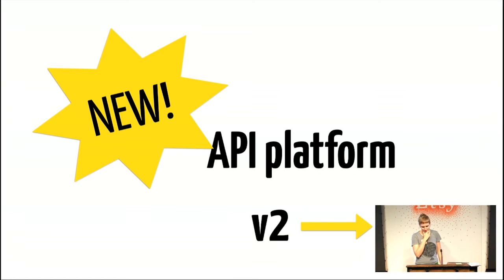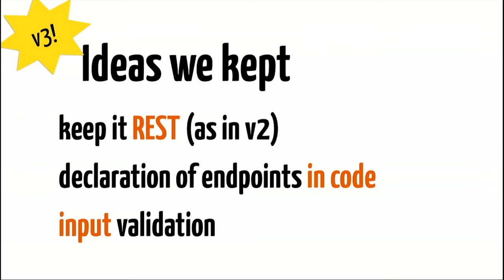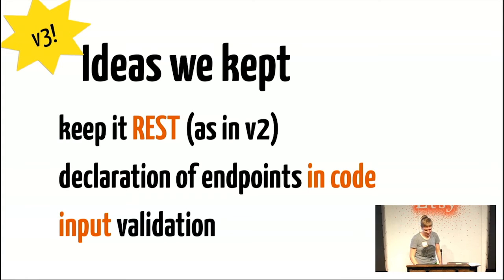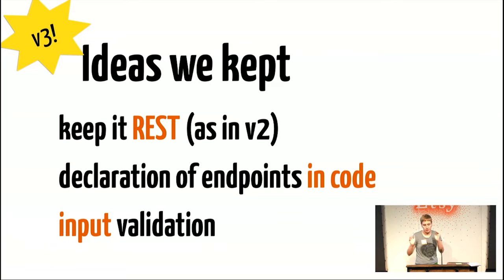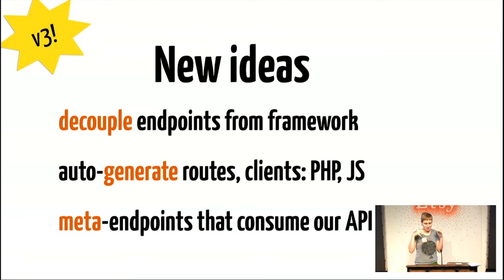We set out to develop a better version of the API framework, which we call Version 3. From Version 2, we kept REST resources — they worked quite well — and the declarative approach with automated input validation so the framework handles it rather than everyone doing it individually. New ideas included decoupling endpoints from the hosting framework, minimizing each endpoint's responsibilities to declaring the route, declaring input expectations, and implementing the handler. The framework glues these together at runtime and can even compile the complete set of routes and a client to call them, for example from JavaScript.